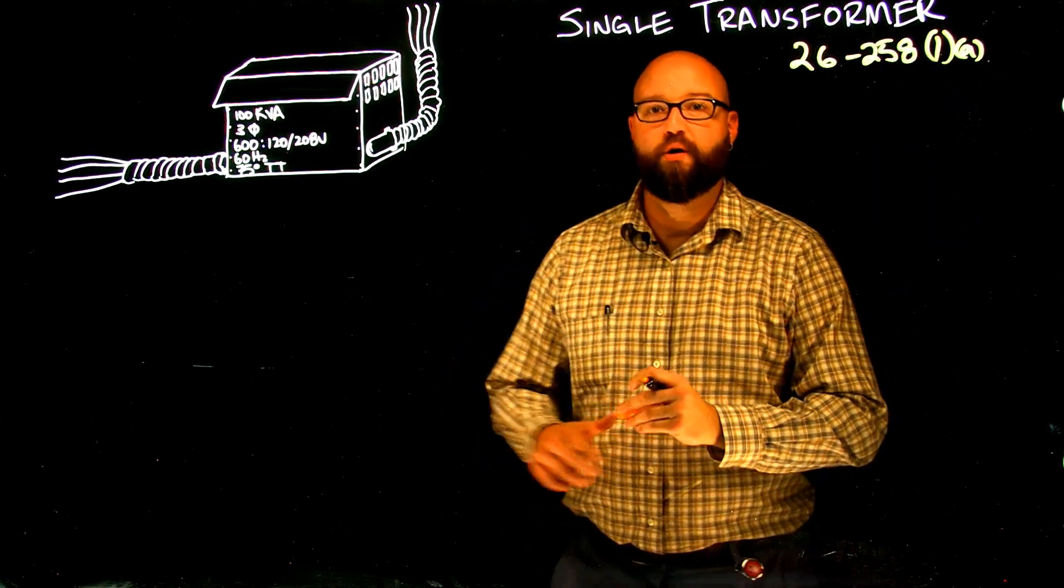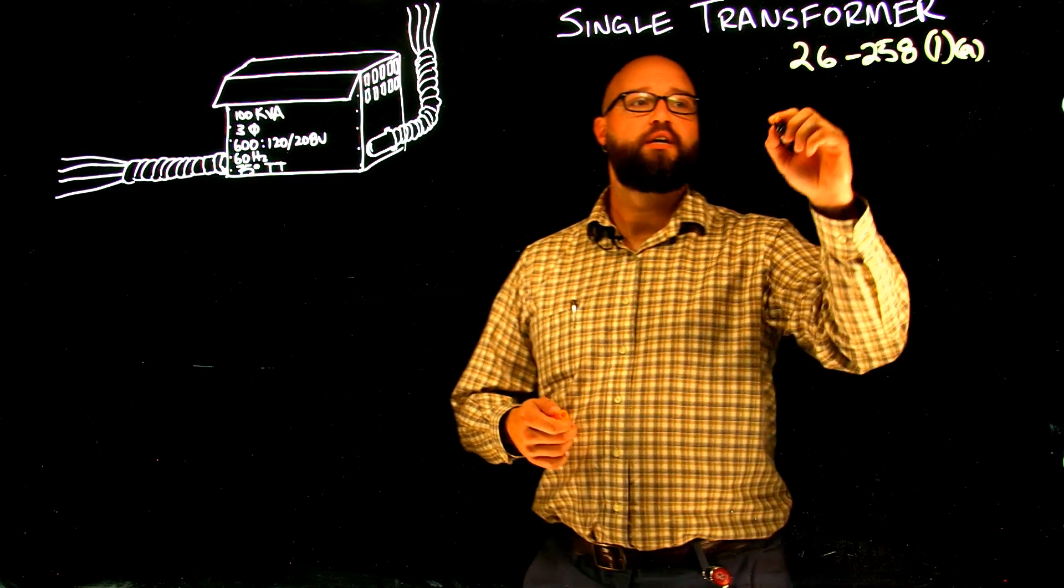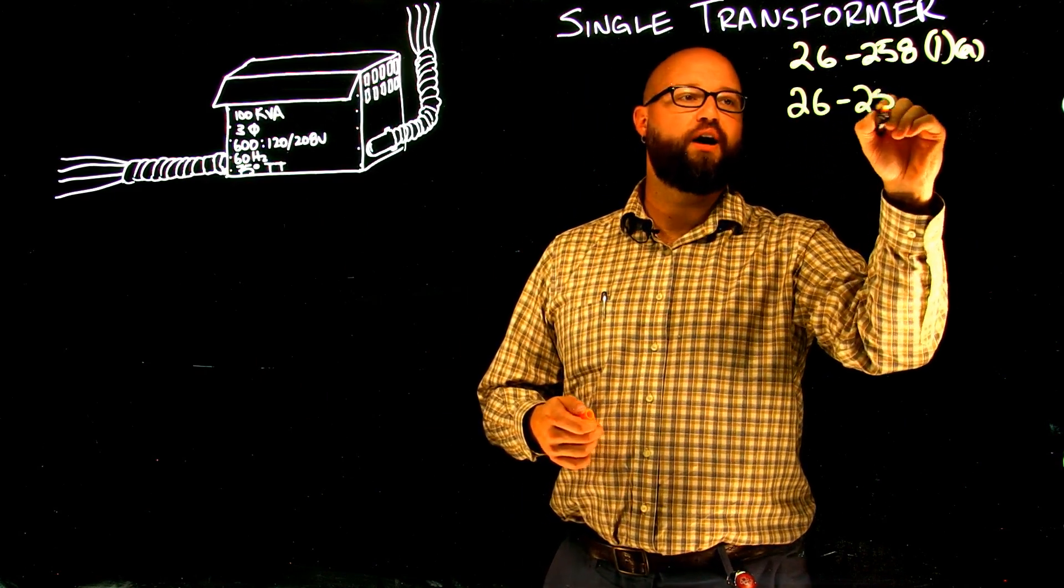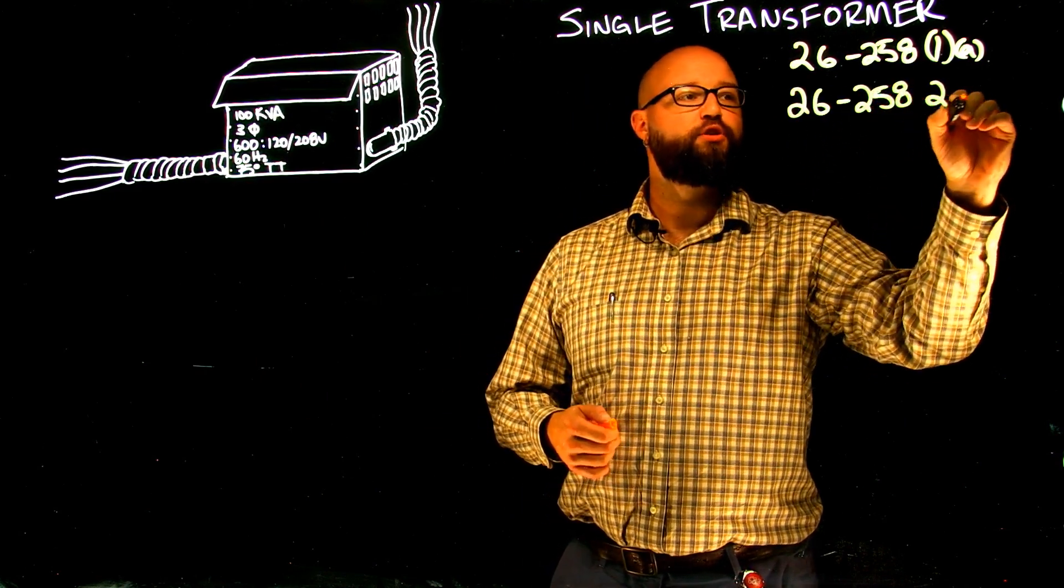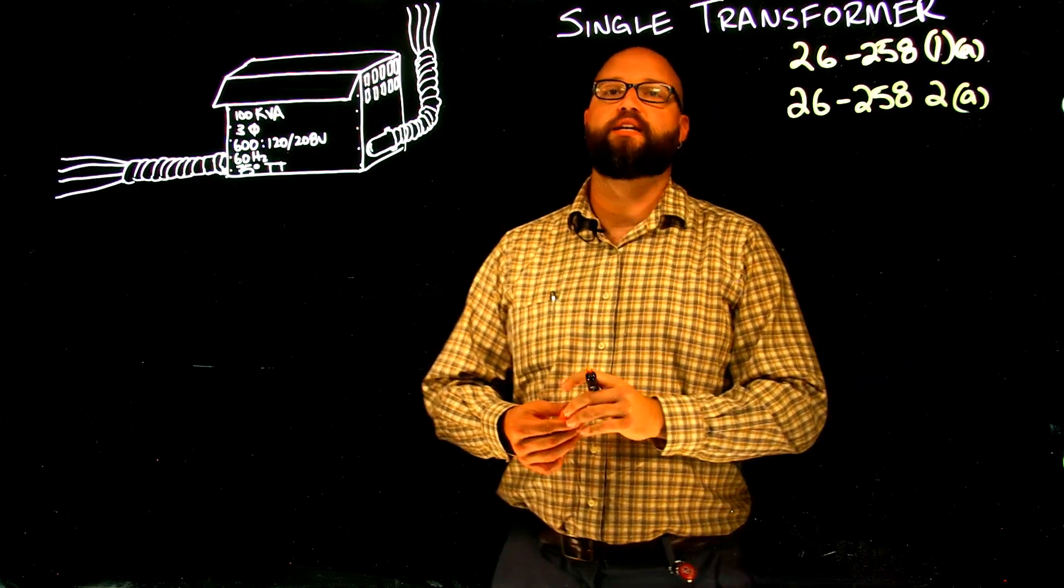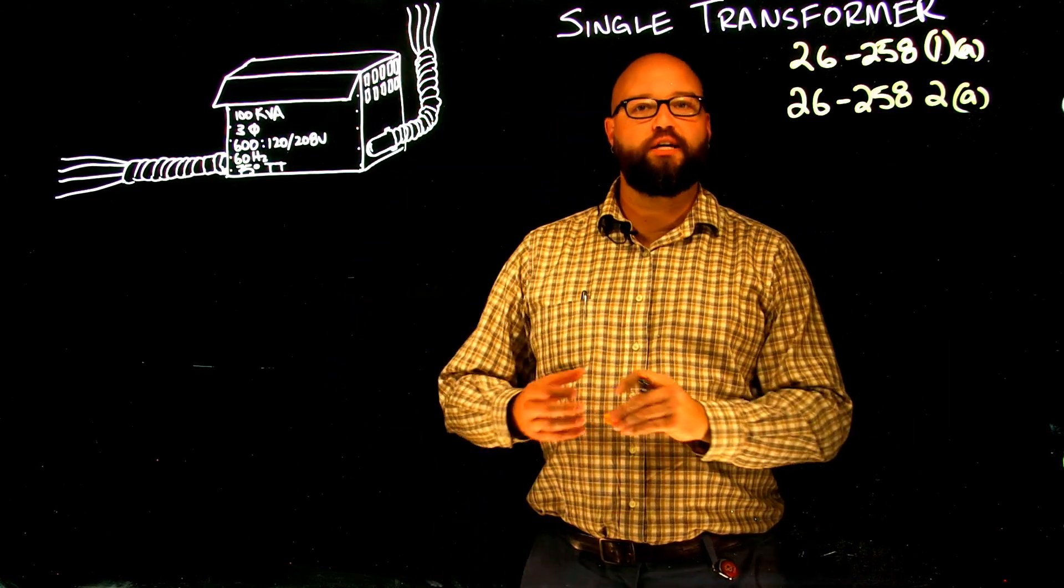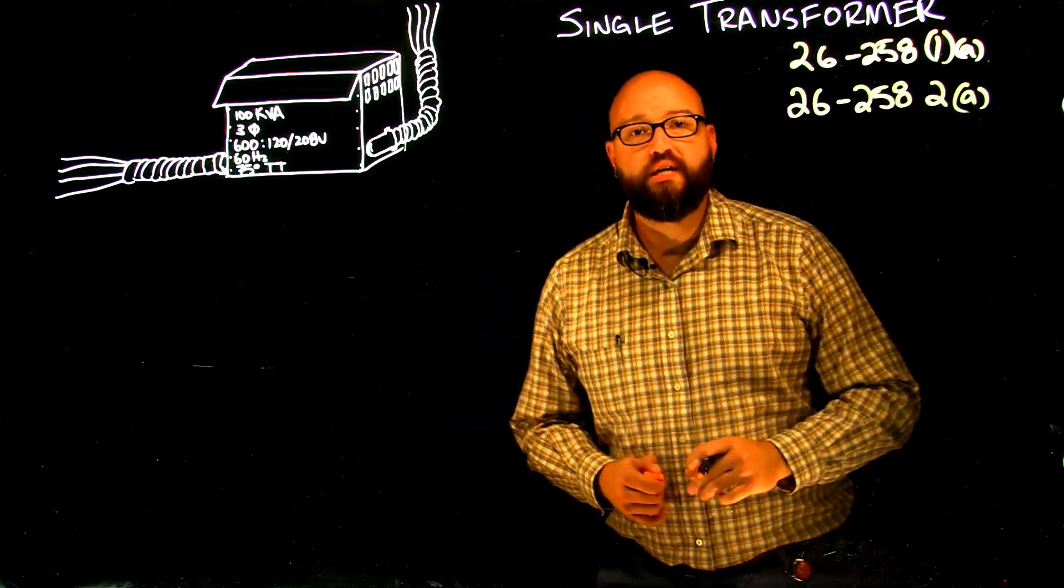and 26-258, subrule 2, item A, for secondary side conductor calculations for single transformers. In the next video,